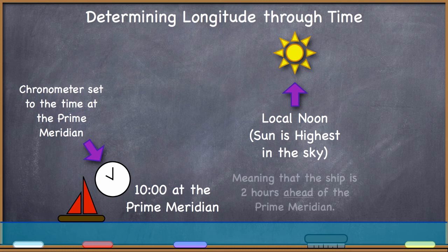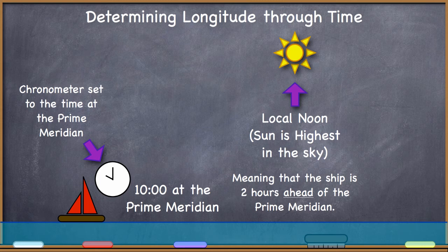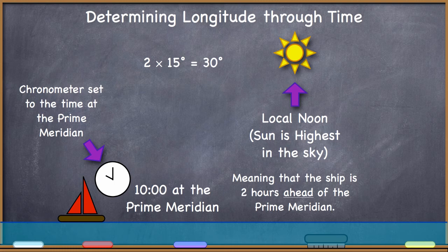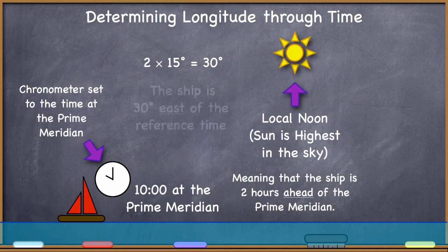Therefore, he knows if the Earth spins at a rate of 15 degrees per hour, he is two hours ahead in this case of the reference time. Two times 15 equals 30. The ship is 30 degrees east of the reference time because he is ahead of the reference time.